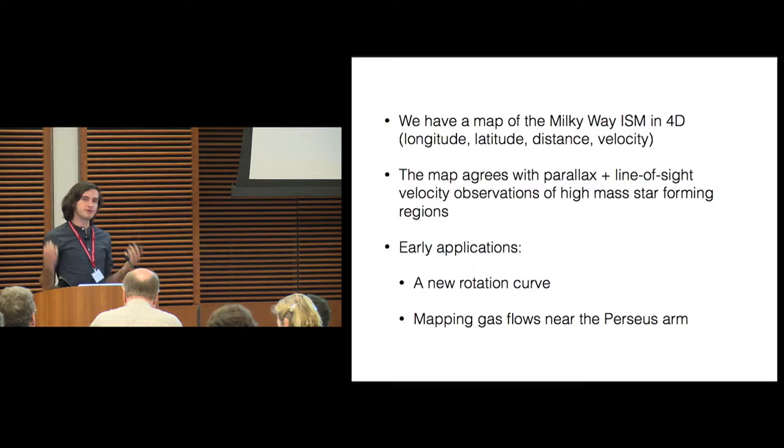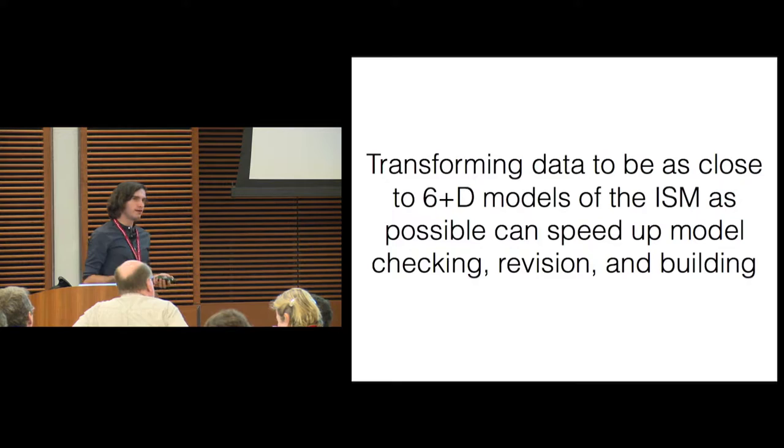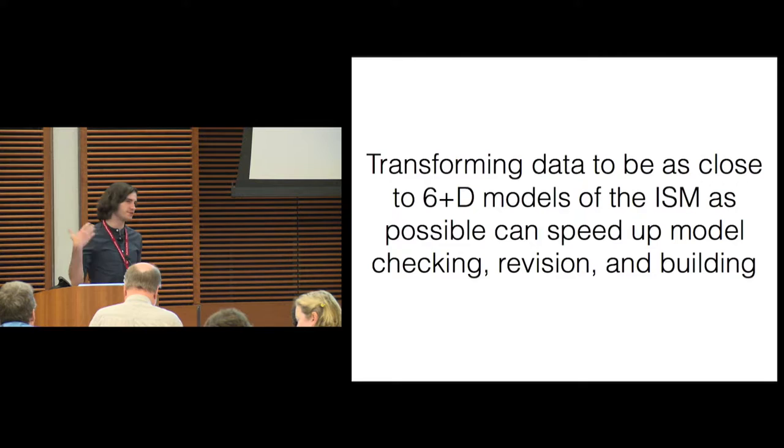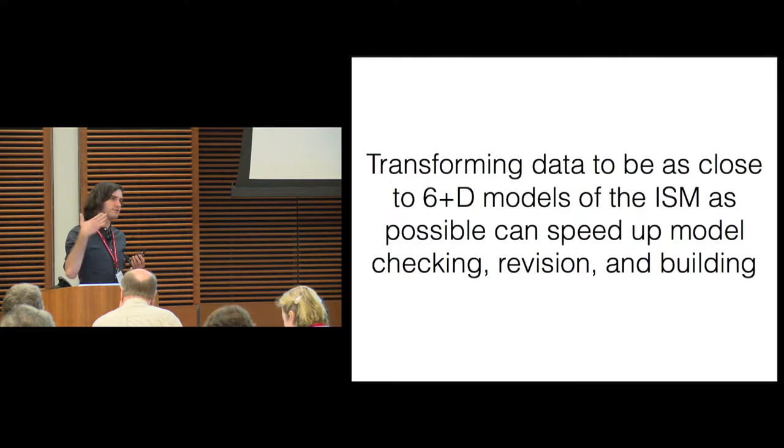We've got this cool new four-dimensional map. The four dimensions are galactic longitude, galactic latitude, distance, and line-of-sight velocity. We've checked this map against a totally independent data set that contains six-dimensional phase space information, and they match surprisingly well. And we've started applying this map to various science questions, even though that's still early days.